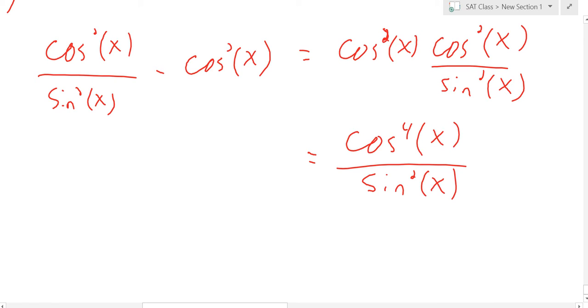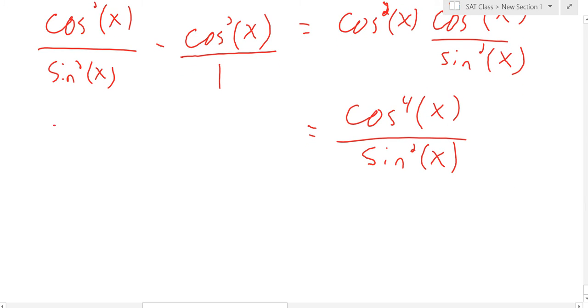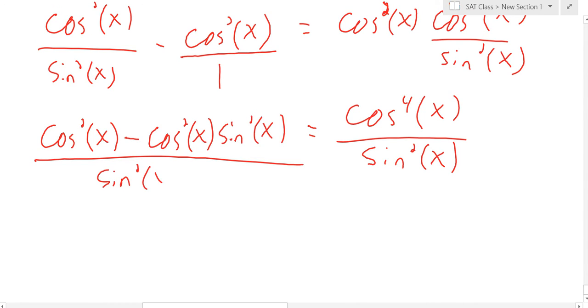So we're going to take the left-hand side and get a common denominator. This is what we're going to have to do. Because the right-hand side is one fraction, so the left-hand side has to become one fraction. So I know this is over one, and all I'm going to do is multiply the top and the bottom by sine squared. That's my common denominator. That's going to give me cosine squared minus cosine squared times sine squared all over sine squared.